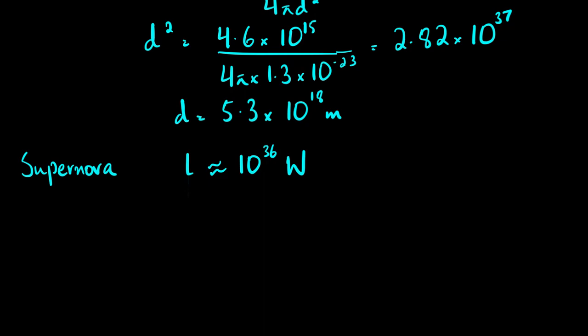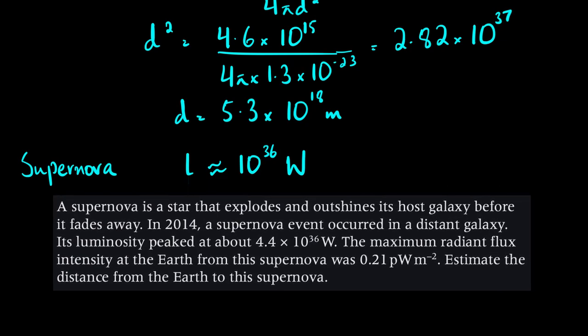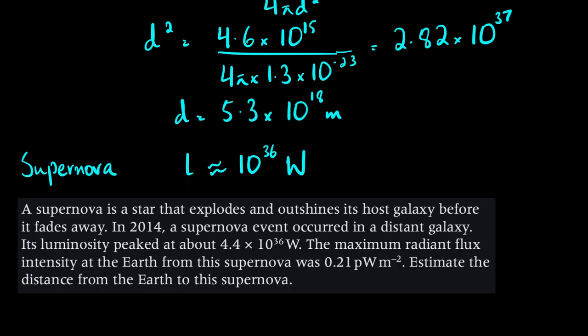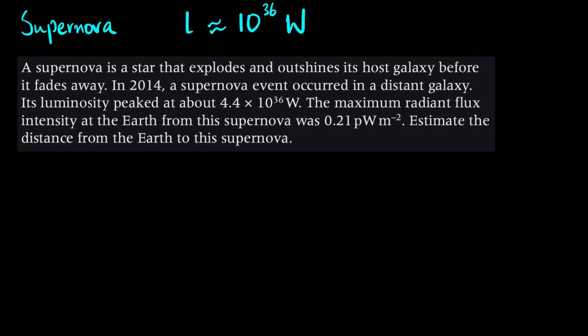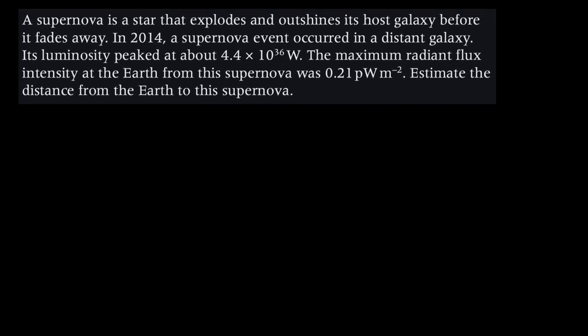Again, you could have the same question like the one we did above but for a supernova, and the method would be the same. Let's look at this question now. A supernova is a star that explodes and outshines its host galaxy before it fades away. In 2014, a supernova event occurred in a distant galaxy. Its luminosity peaked at about 4.4×10³⁶ W - we know this value corresponds to L, this is luminosity. The maximum radiant flux intensity at Earth from the supernova was 0.21 pW/m² - so we know this is F. You can double-check with the units: power upon area, so this has to be radiant flux intensity.